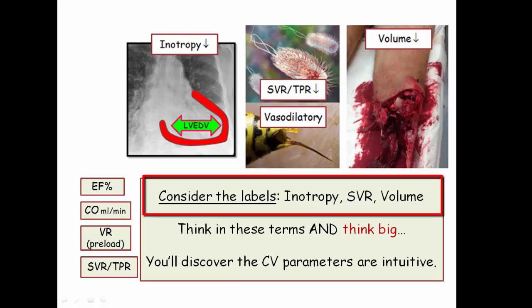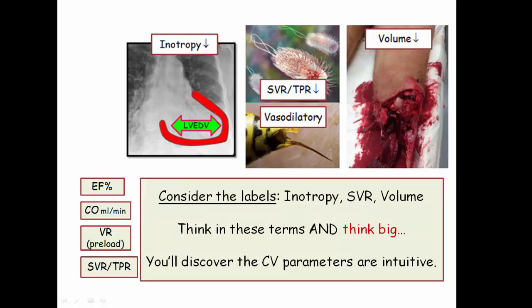Cardiogenic shock is a failure of inotropy. The Frank-Starling law has the ventricle compensating through increased stretch, also referred to as increased end diastolic volume. Sepsis and anaphylaxis reflect a complete failure of systemic vascular resistance, and hypovolemia is just as it sounds — low blood volume. To work your way through the cardiovascular measures, you are encouraged to think big, very big. In so doing, you will realize how intuitive these measures are.